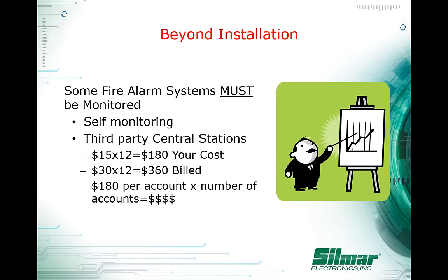When talking to dealers, you can expand on the concept of 'beyond installation.' Beyond installation means the fire alarm needs to be monitored — some systems must report to a central station in case of fire, supervisory issues, or trouble, such as a damaged detector that needs replacing. Dealers can benefit from monitoring revenue: a central station charges a dealer roughly $15 a month, and dealers typically charge the customer around $30 a month.